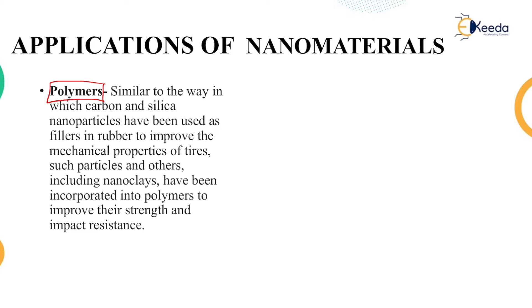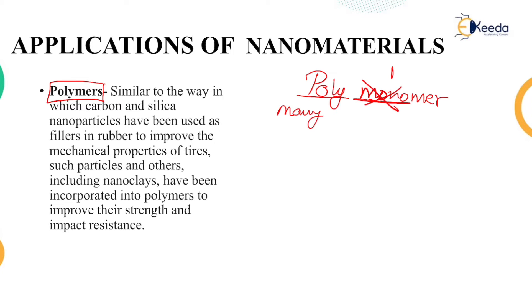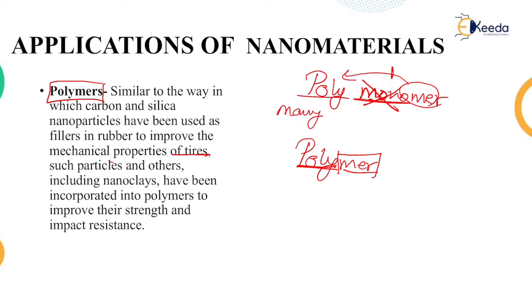Applications: first is polymers. Poly means many, and 'mer' comes from the word monomer — mono means one. Many molecules combine together to form a polymer. Similar to the way carbon and silica nanoparticles have been used as fillers in rubber to improve the mechanical properties of tires. Other such particles include nanoclays, which are incorporated into polymers to improve strength, impact resistance, and overall resistance.